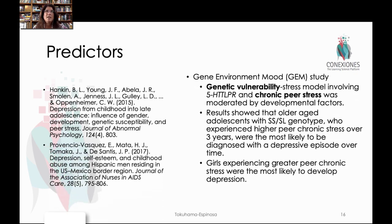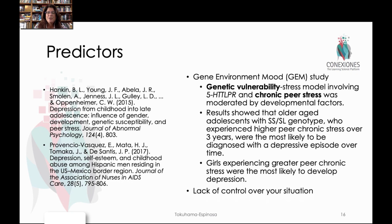A second set of studies looks at genetic and environmental triggers for depressive states. For example, newer research on depression, self-esteem, and childhood abuse among Hispanic men residing in the U.S.-Mexico border region examines how personal self-esteem combined with abusive home situations leads to depression. This is primarily looking at the idea that when you have little control over the situation around you, depressive states set in.